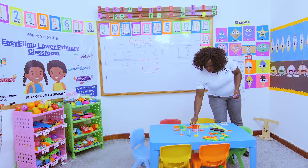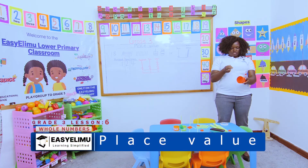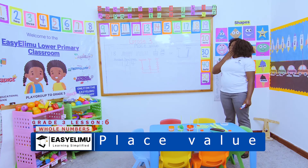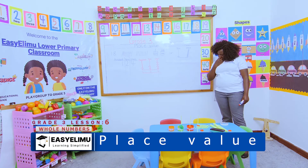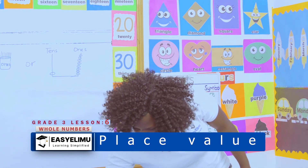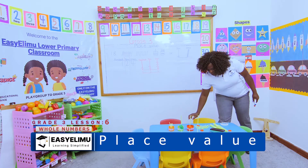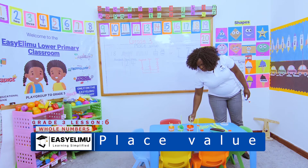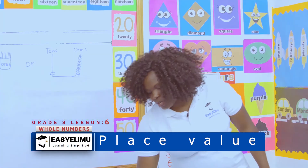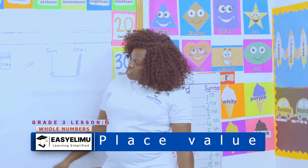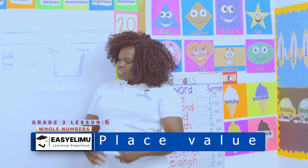Using the place value chart: this is the ones place value, this is the tens, and this is the hundreds. I've been told to represent the ones — I have four ones, so I write one, two, three, four. How many tens? Two tens: one, two. How many hundreds? Only one hundred. So my number remains: one hundred, two tens, and four ones.